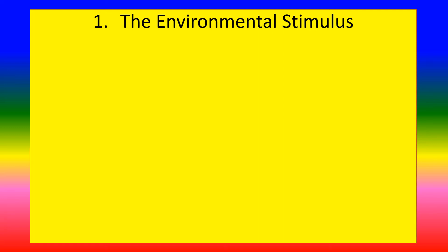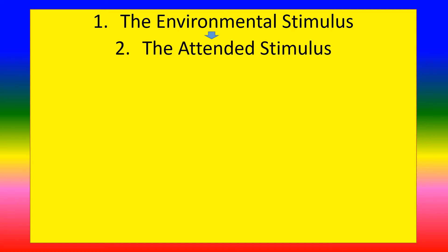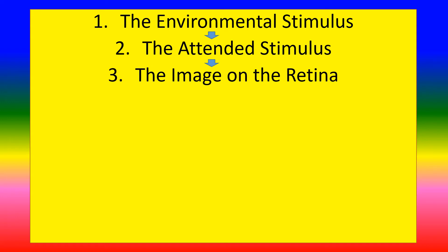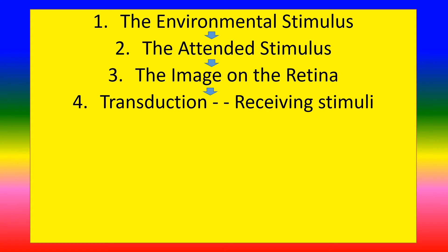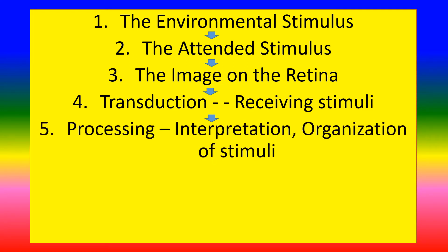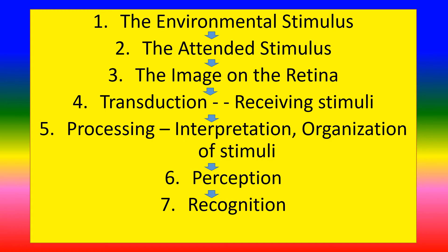The steps in the perceptual process are: first, the environmental stimulus; second, the attended stimulus; third, the image on the retina; fourth, transduction — receiving stimuli; fifth, processing, interpretation, and organization of stimuli; sixth, perception; seventh, recognition; eighth, action.